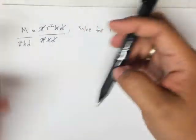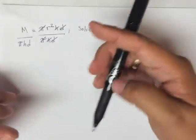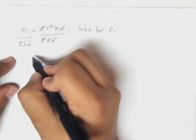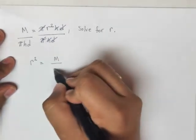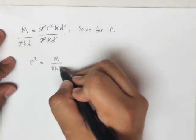I say line out or cross out. This cancel implies, again, we're left with zero. So now I've got something that looks like this: r² equals m over πhd.